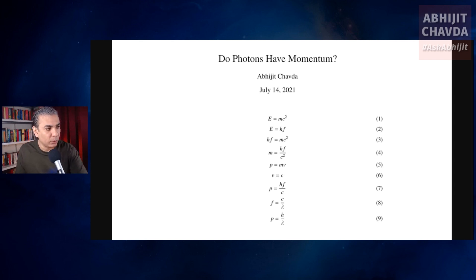So do photons have momentum. We know that from Einstein's famous equation, E equals mc squared. If you can see equation number one here, E equals mc squared. So mass is equivalent to energy. Energy is equivalent to mass.